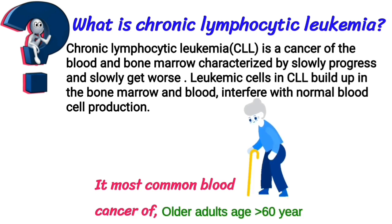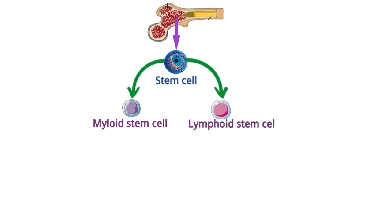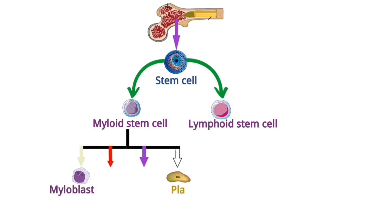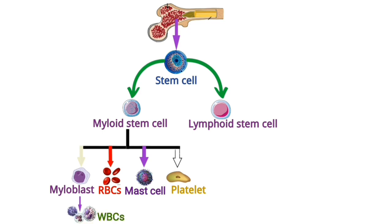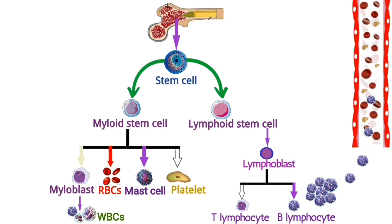There are two types of bone marrow: yellow and red. In red bone marrow, stem cells are present. Stem cells further differentiate into myeloid stem cells and lymphoid stem cells. Myeloid stem cells differentiate into myeloblasts, platelets, red blood cells, and mast cells. Myeloblasts further differentiate into white blood cells. Lymphoblasts further differentiate into B lymphocytes and T lymphocytes. 95% of CLL originates from B lymphocytes.